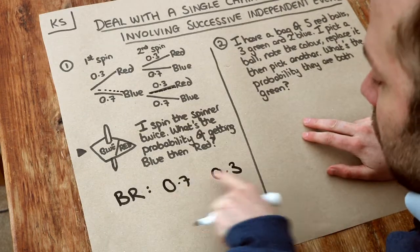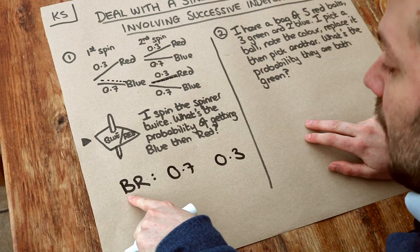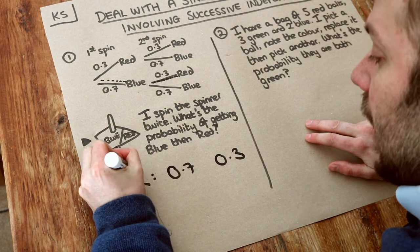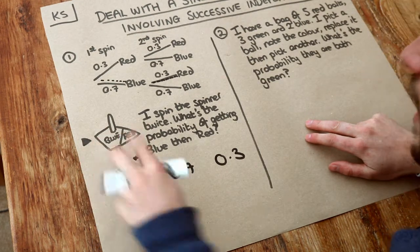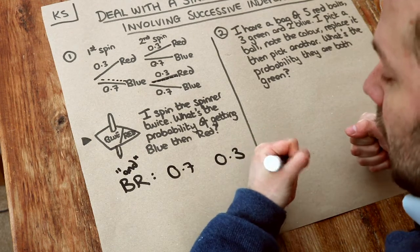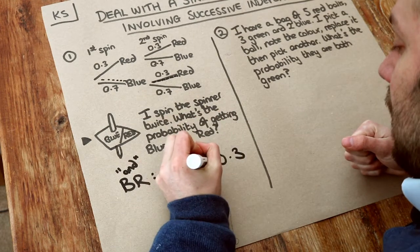Now what do we do with those two probabilities? Well we want the probability that the first spin is blue and the second spin is red. Now if I use the word and in probability, you times the probabilities together.